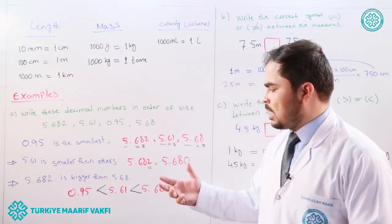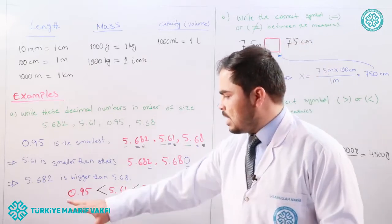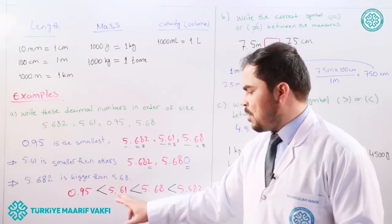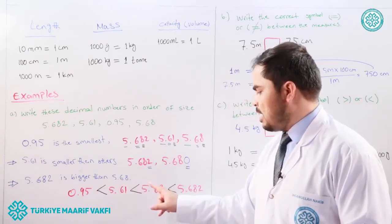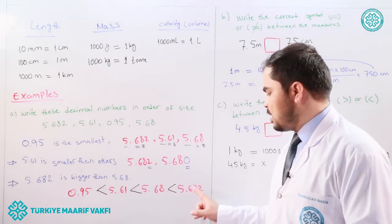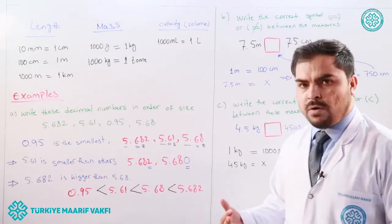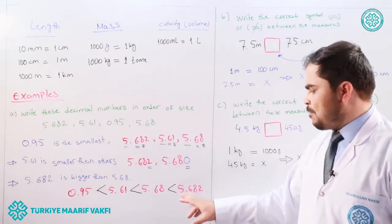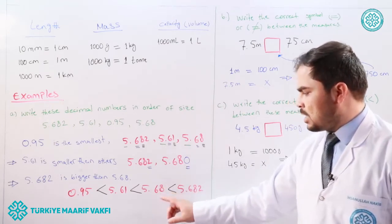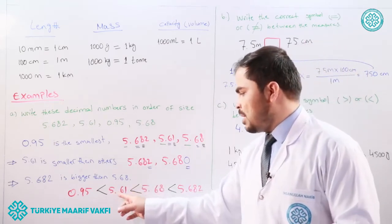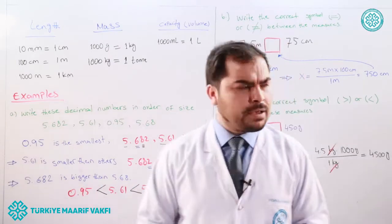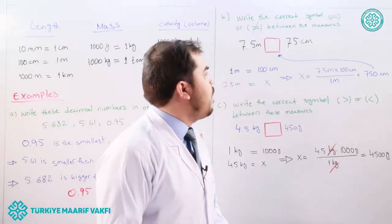Using sign convention, the order from smallest to largest is: 0.95 < 5.61 < 5.68 < 5.682. Or written the other way: 5.682 > 5.68 > 5.61 > 0.95.